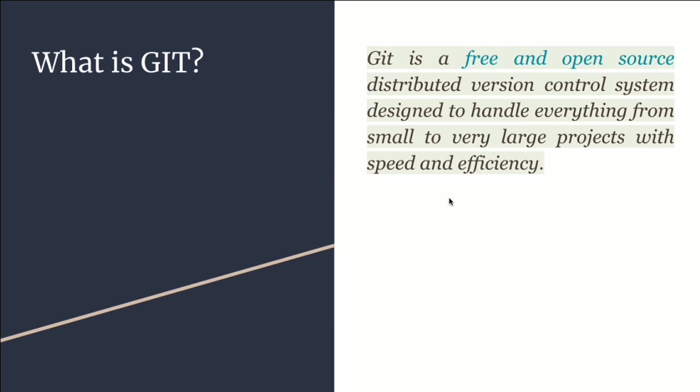What is Git? Git is a free and open source distributed version control system designed to handle everything from small to very large projects with speed and efficiency.